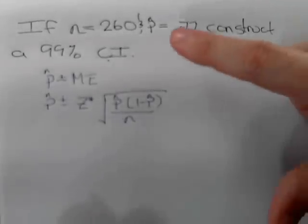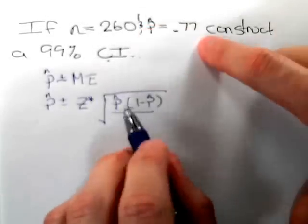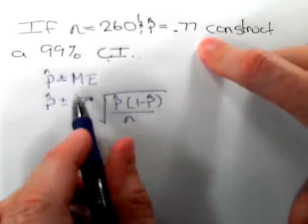In this situation we know the sample size and we have p hat. We don't have z star.